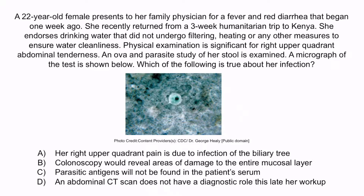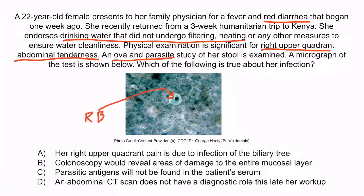Hopefully from the question stem, you notice that this patient has an Entamoeba histolytica infection. She has evidence of bloody diarrhea, she drank unclean water, and she has right upper quadrant pain suspicious for a parasitic abscess. Finally, the O&P test is consistent with a parasitic infection, and we can see by looking at the micrograph that we have evidence of an RBC. Remember that this is also called erythrophagocytosis.